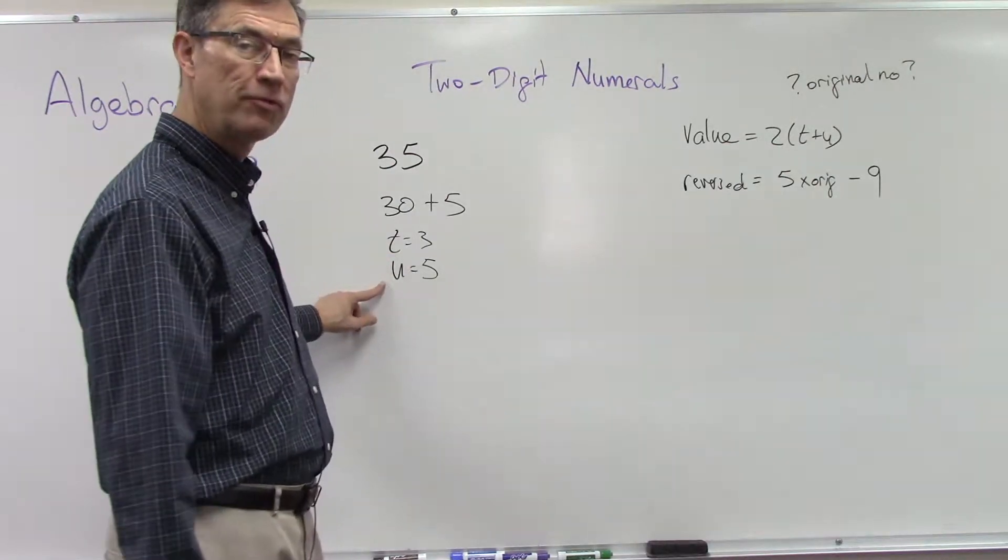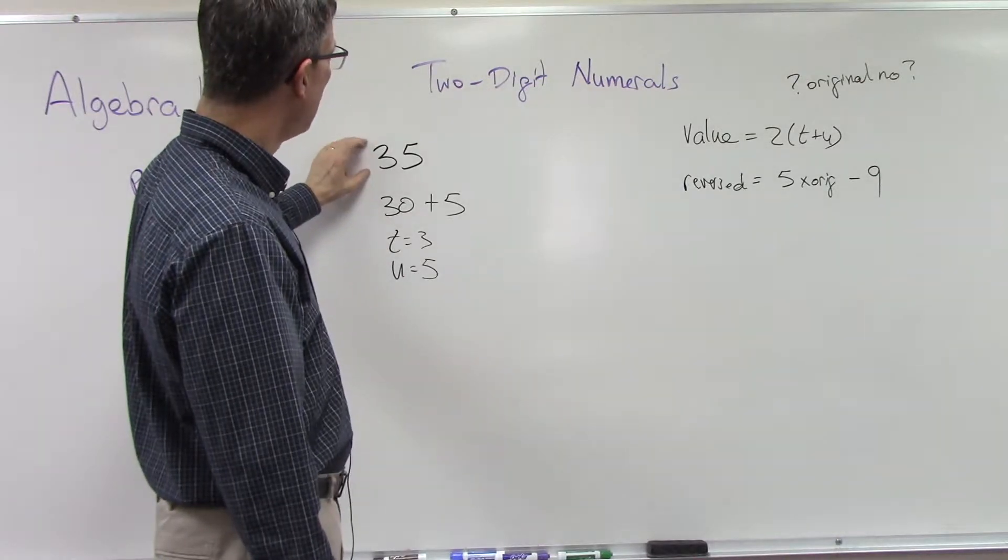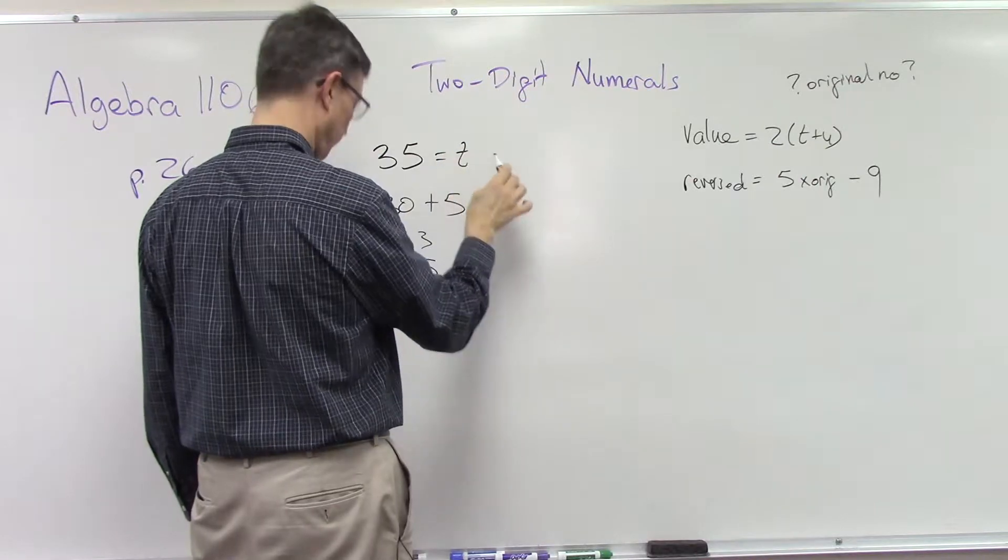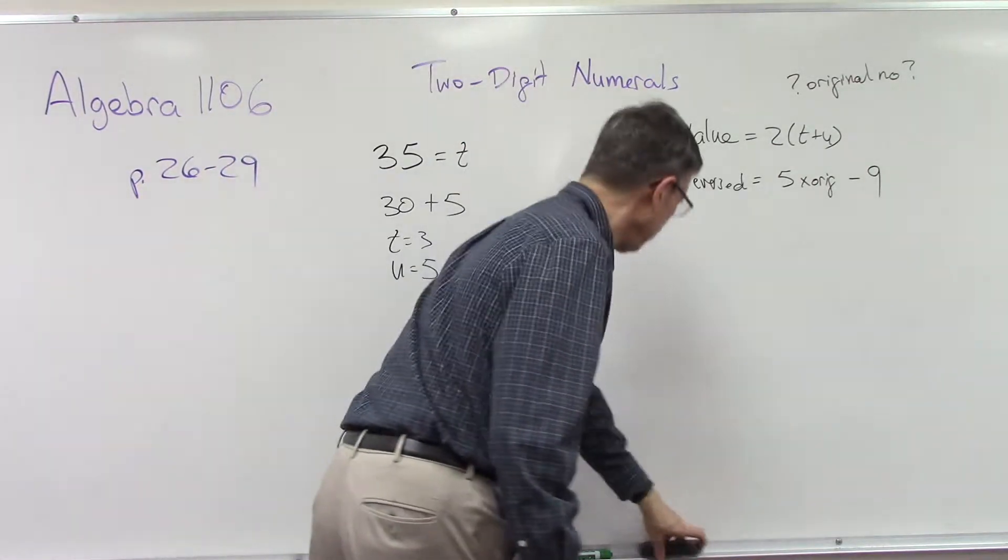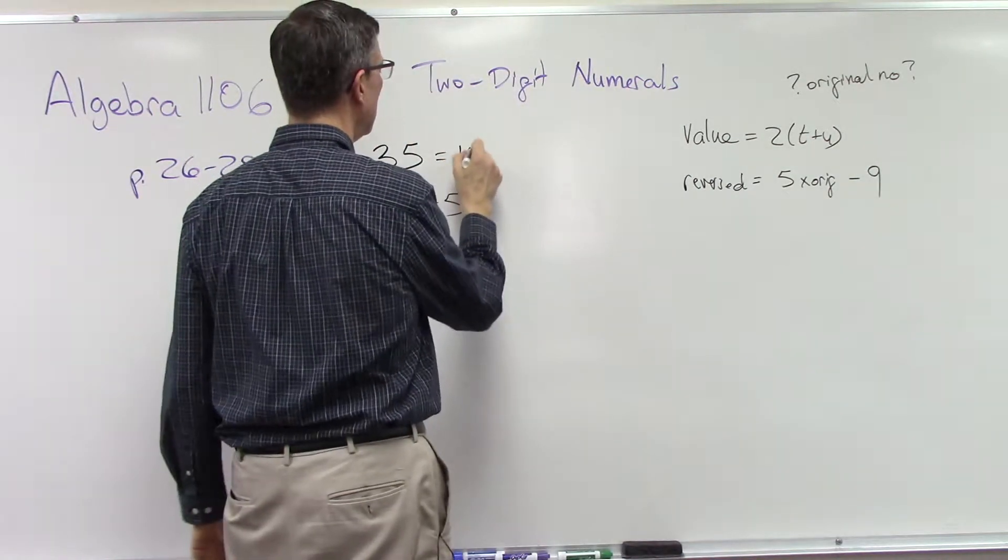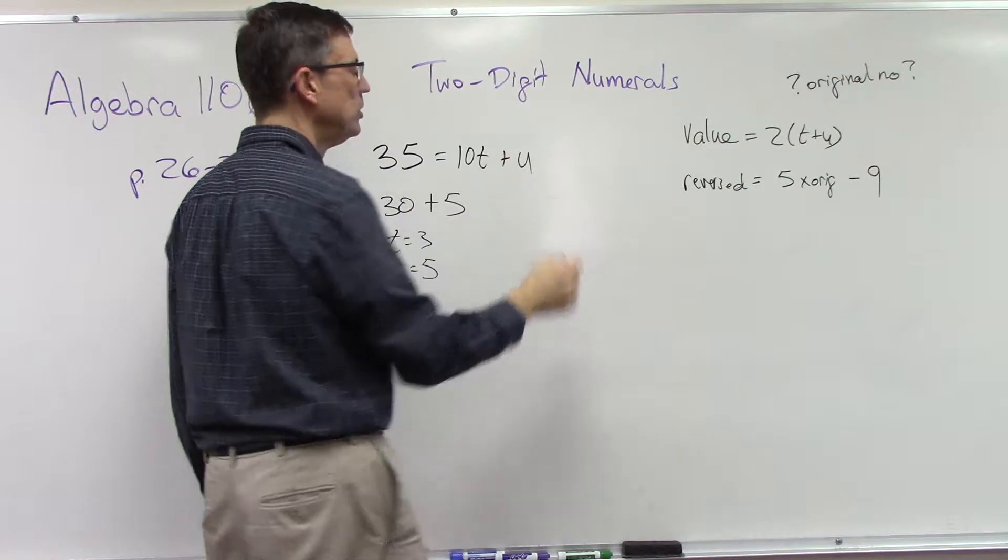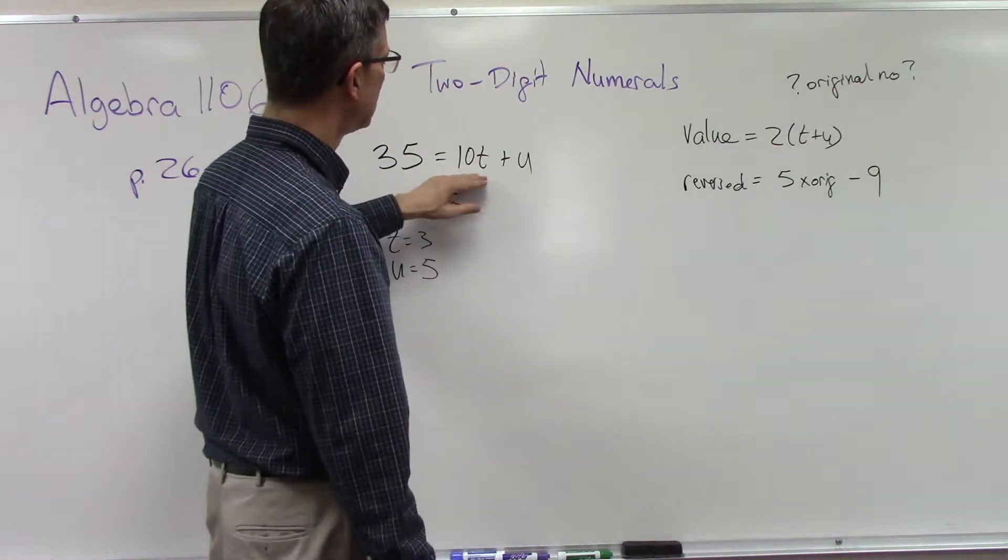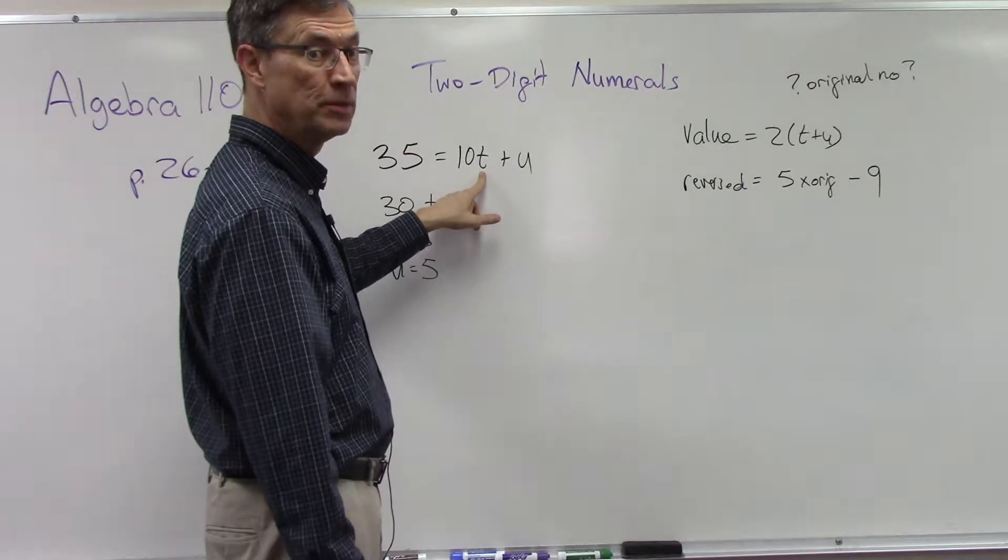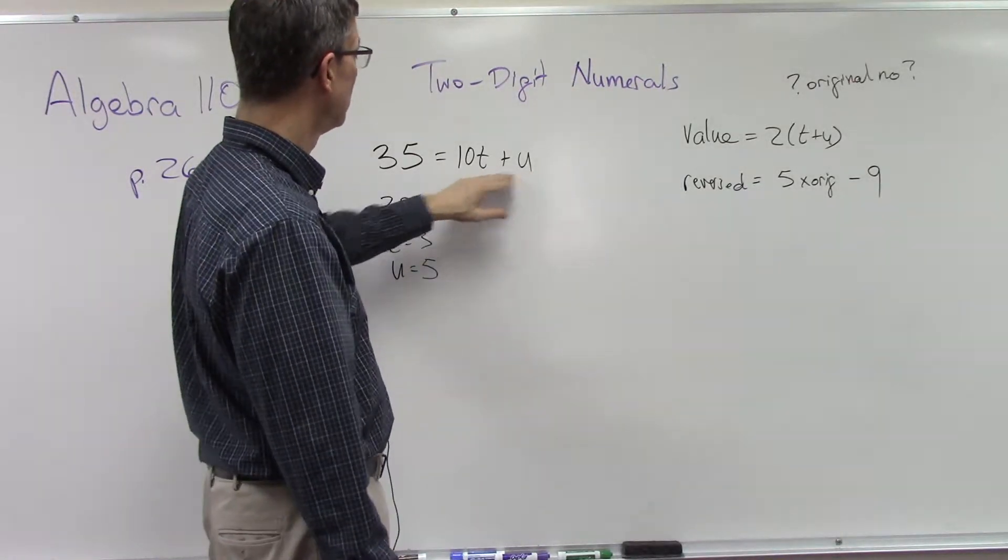So to come up with this value, we would say that it is 10 times the tens digit plus the units digit. So in this case, I would plug in 3 for the t and get 3 times 10, which is 30, plus 5. 30 plus 5 is 35.